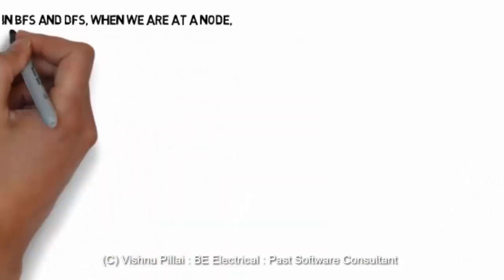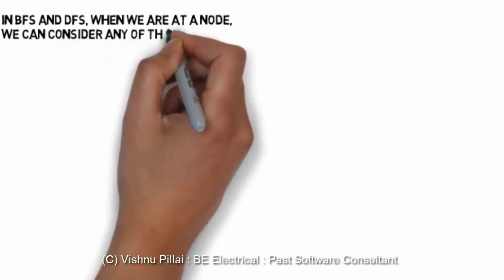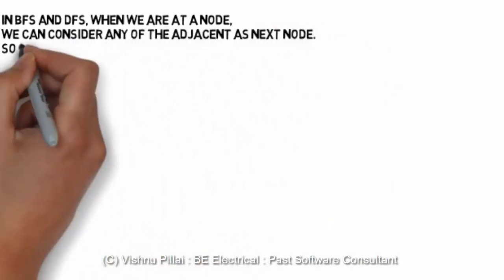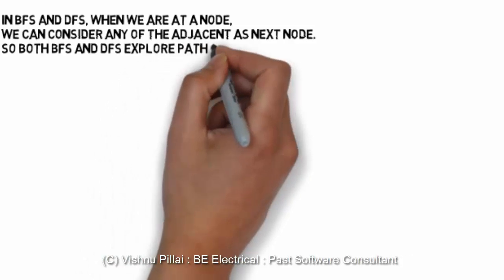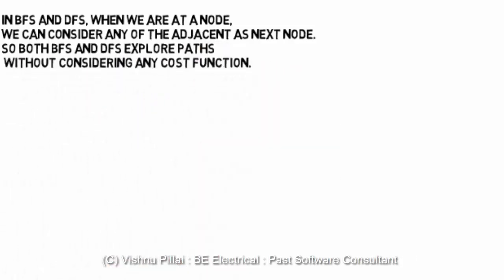In best first search, in breadth first and depth first search when we are at a node we can consider any of the adjacent as the next node. So both breadth first search and depth first search explore paths without considering any cost function.